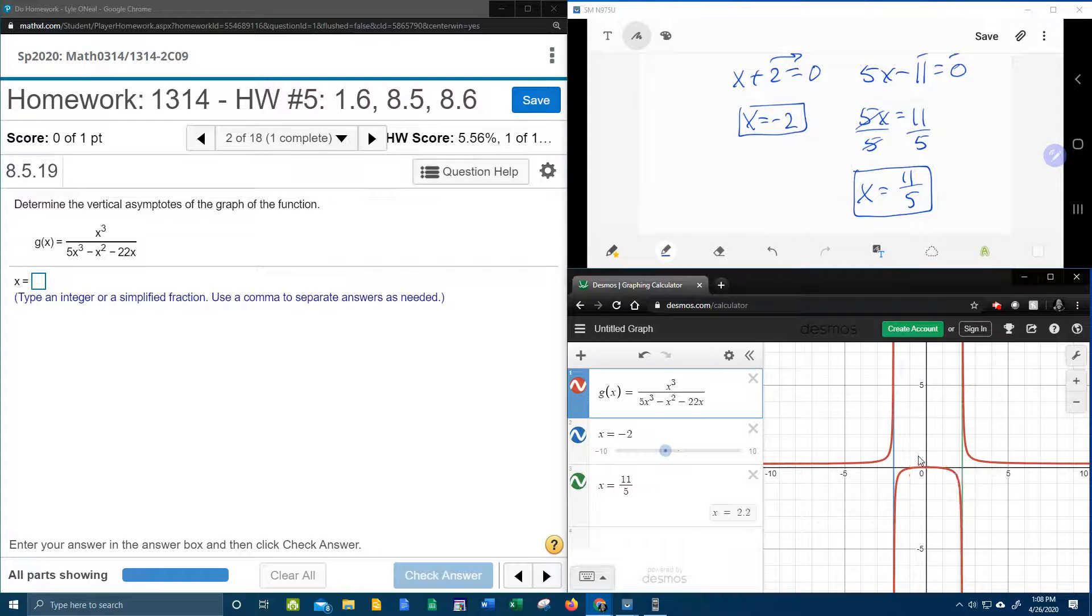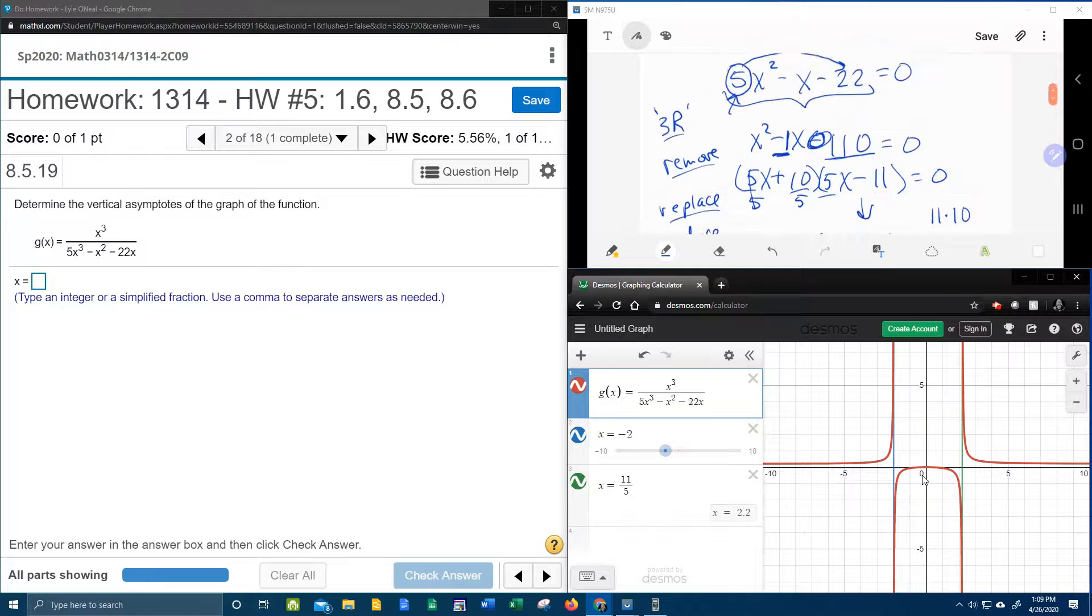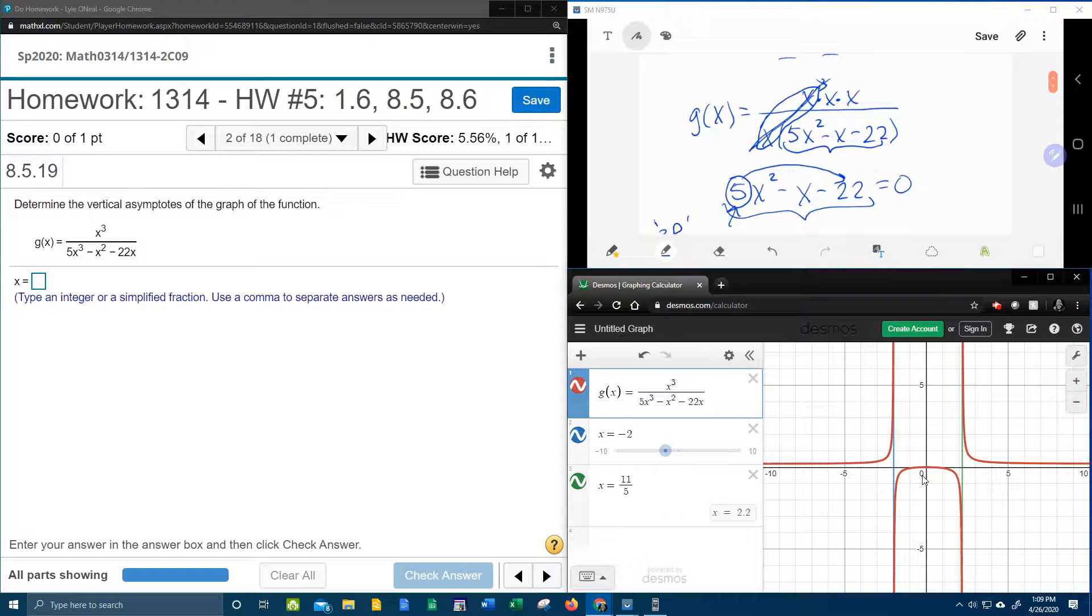It's just not a vertical asymptote since the rational function reduced and that we lost that x there.